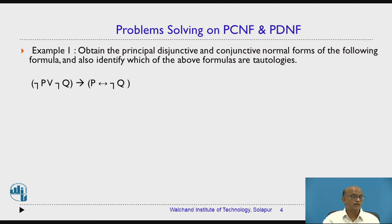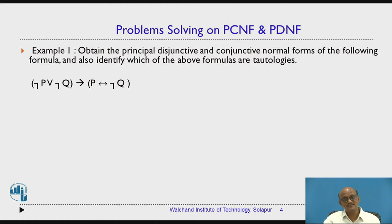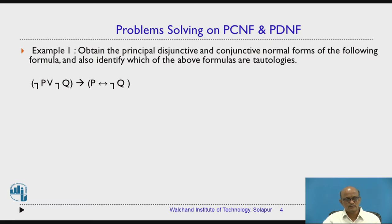Earlier in the previous videos we used to find out either PDNF or PCNF, but here after obtaining PCNF and PDNF, we are also supposed to identify whether they are tautologies or contradictions. Tautology is where you will only have PDNF — the principal disjunctive normal form — and will not have PCNF. For two variables, if you get the summation of all four minterms, that is called a tautology, meaning it will definitely not have a PCNF.